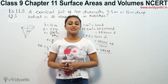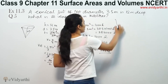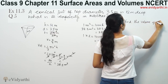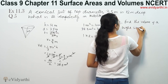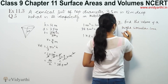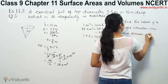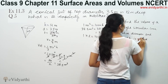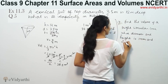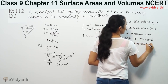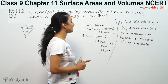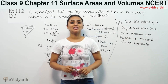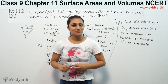This was question number 5 from exercise 13.7. Now it's your turn to solve a question. Find the volume of a right circular cone whose diameter and height are 14 centimeters and 20 centimeters respectively. Let's see how many of you get the correct answer. Do pause the video and try. Goodbye.